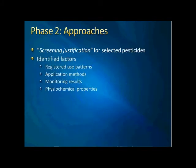Those reports are really good — they provide even more information compared to a regular journal paper. Once we have those screening justifications, we hold a group meeting to determine some commonly identified factors that can be used in our project. Those factors include use pattern, application methods, monitoring results, and chemical properties.